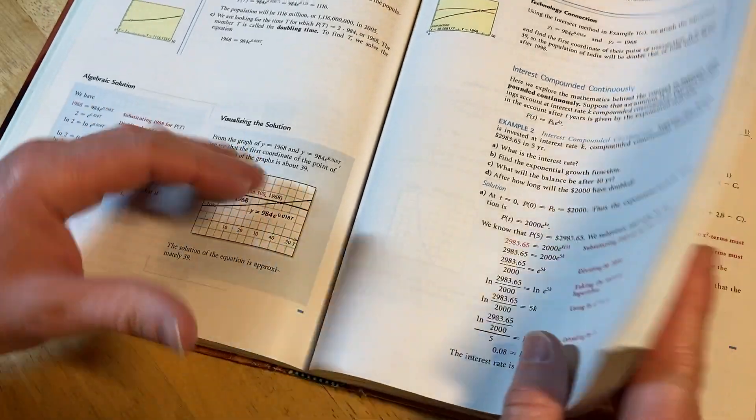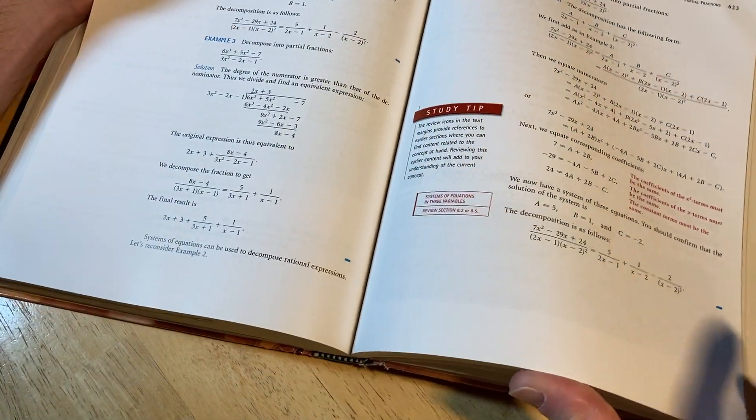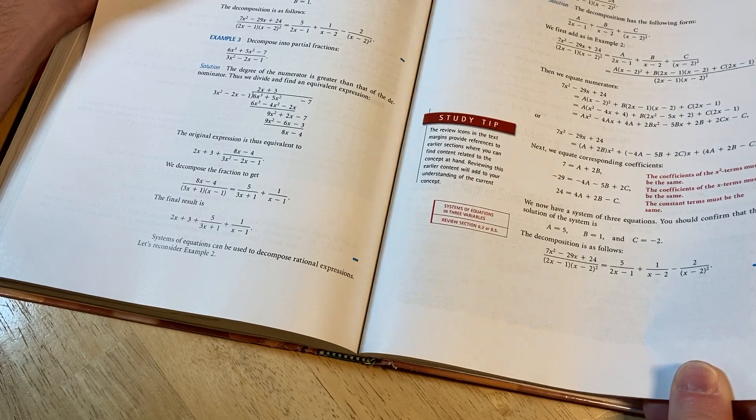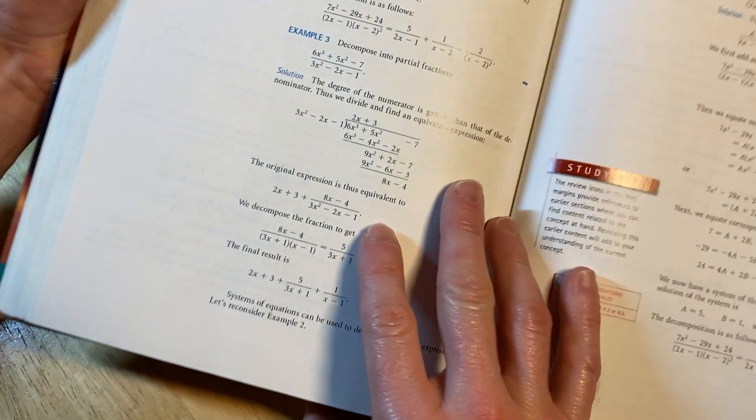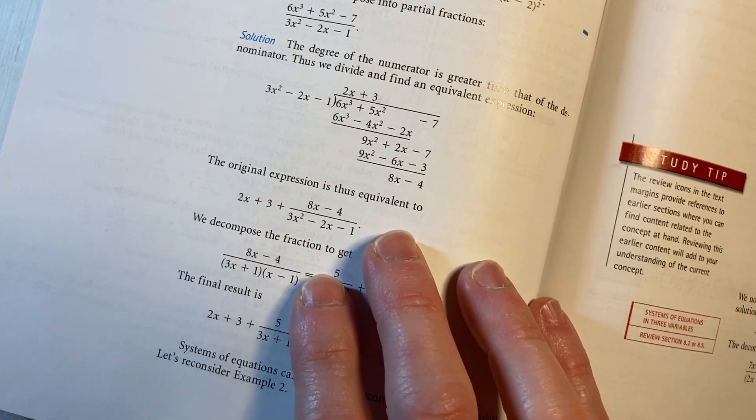But if you don't have a pre-calc book yet, I'd definitely recommend getting one. It doesn't have to be this one. Just get any pre-calc book. This one is particularly good, though. You can see here they're doing a partial fractions example. It's pretty cool, right?